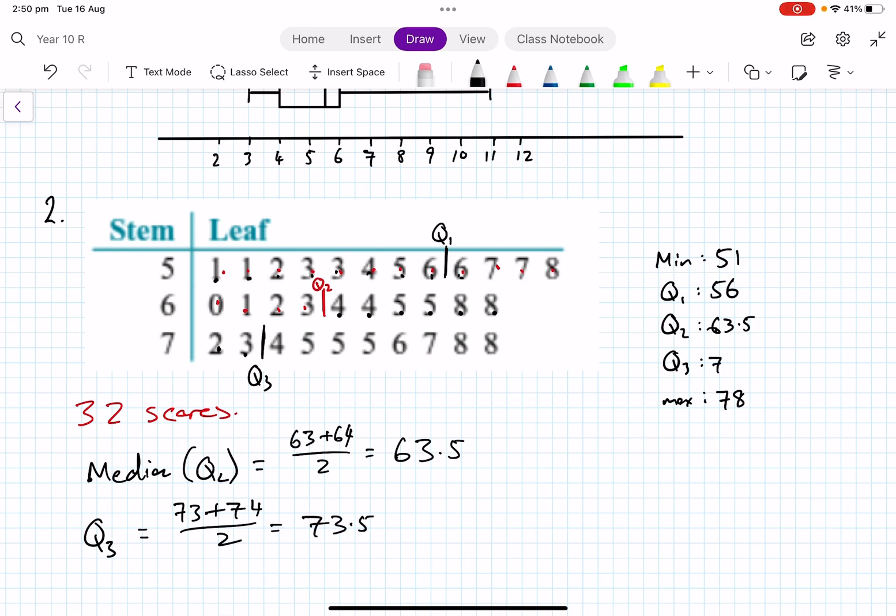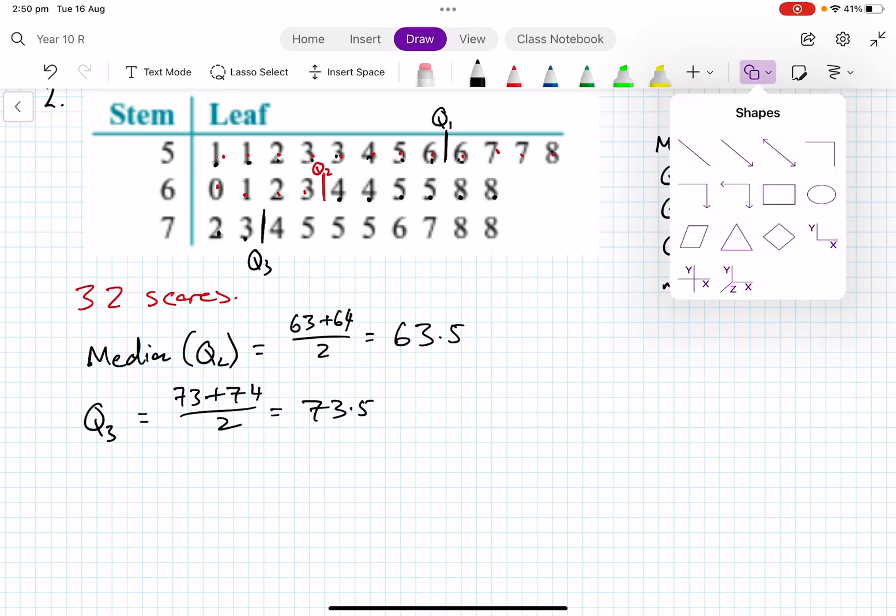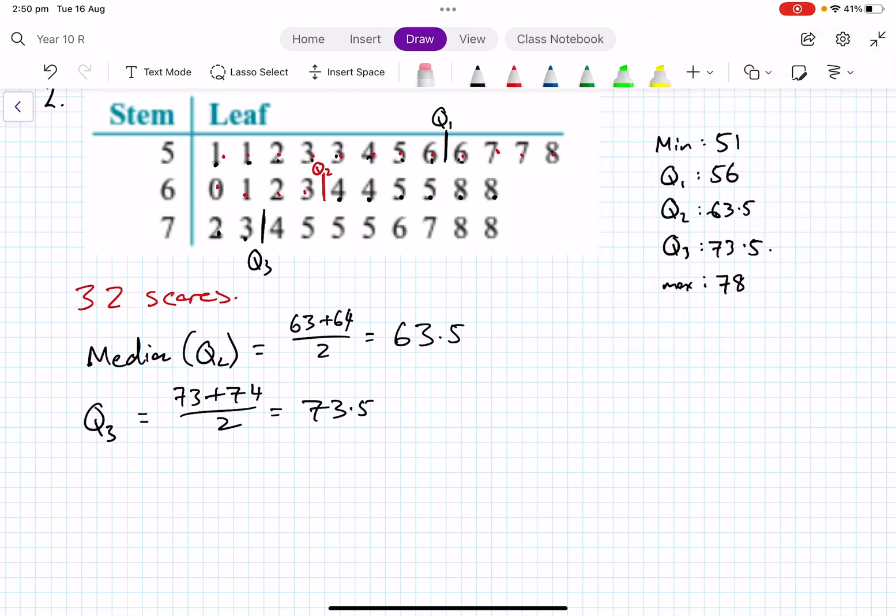So we've got that here. All right, so once you have your whole summary, then we're in a position. Remember it's 51 up to 78, so it's quite a large range. I'll do my straight scale across here, and I'm going to start down here.